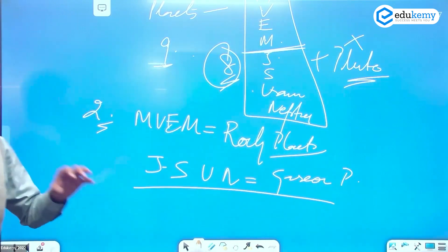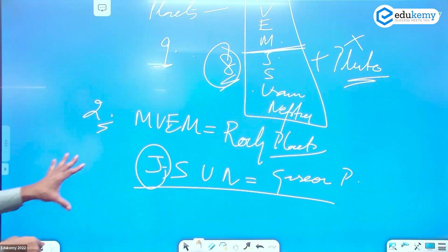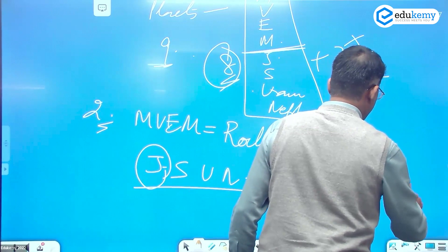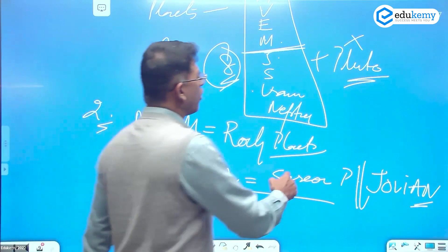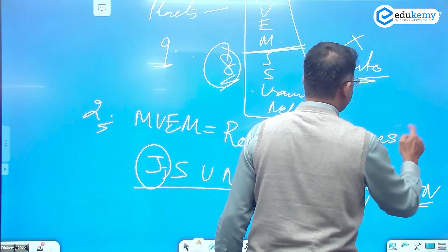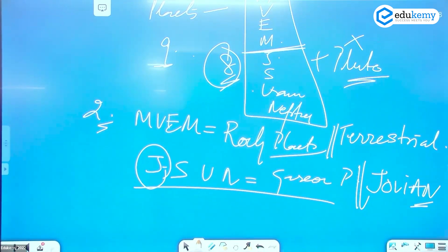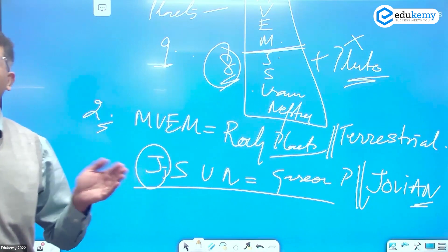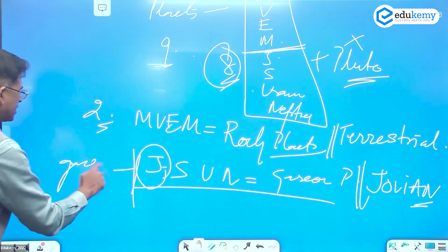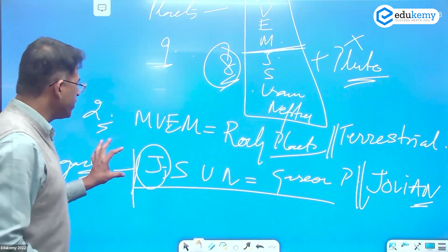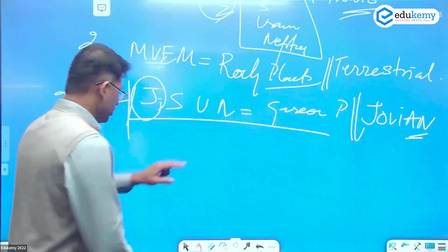The other four — Jupiter, Saturn, Uranus, Neptune — are gaseous planets. Jupiter is largely a hot ball of gas. These are also called Jovian planets, meaning 'like Jupiter.' The first four are also called terrestrial planets. Jovian planets have lesser density, while rocky planets are more dense.